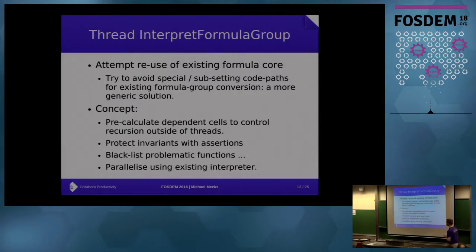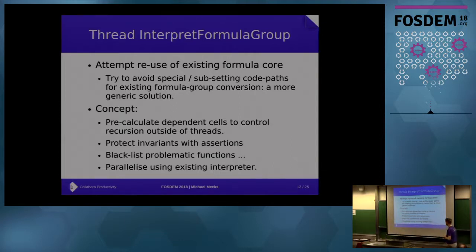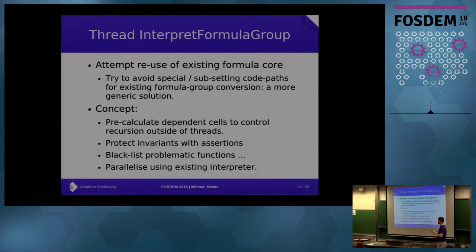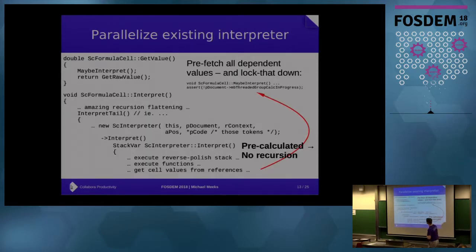So, threading interpret_formula_group. What we really wanted was to reuse the existing formula core rather than creating more special cases off to the side, avoiding too much subsetting, and ideally removing the software interpreter by collapsing everything in. The idea is that we pre-calculate dependent cells much as before, but instead of stuffing them into a matrix in a strange way, we just leave them where they are. We're confident that when we go to get them, maybe_interpret will return false, so we can use the existing code.